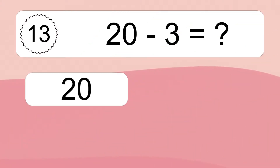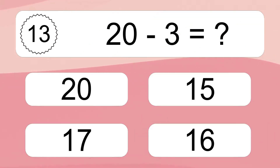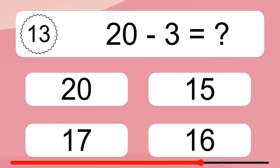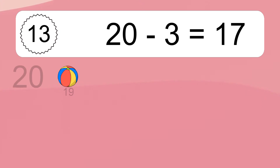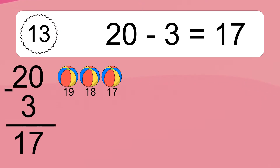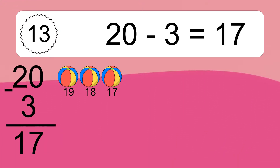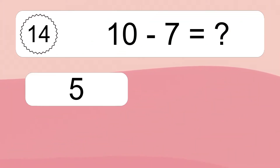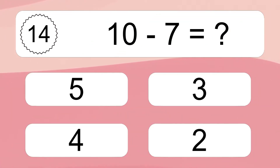20 minus 3 equals what? 20 minus 3 equals 17. Let's count it: 19, 18, 17.